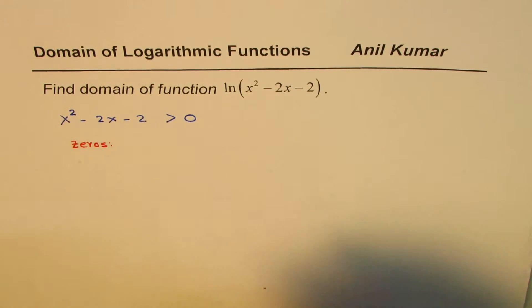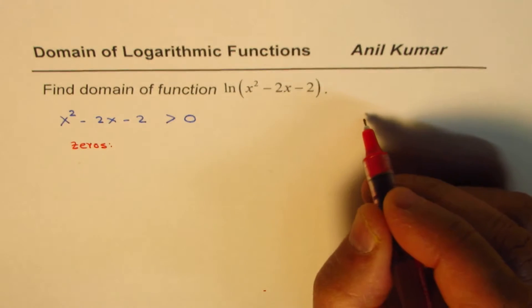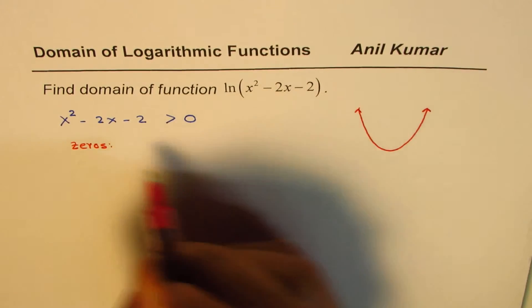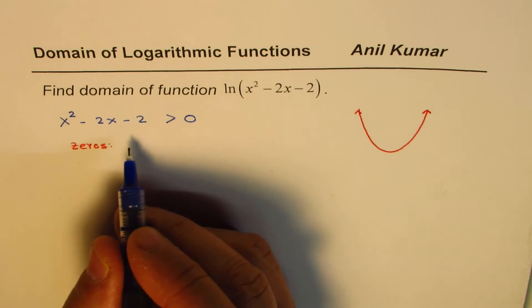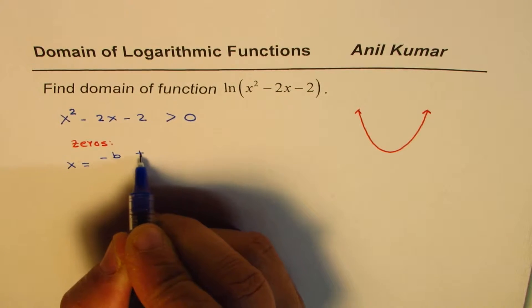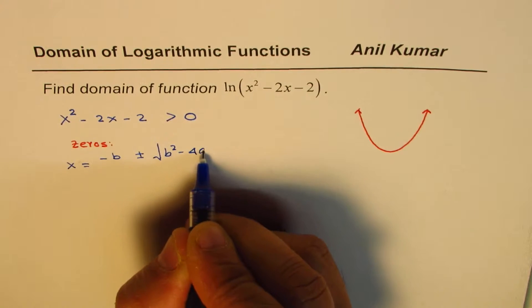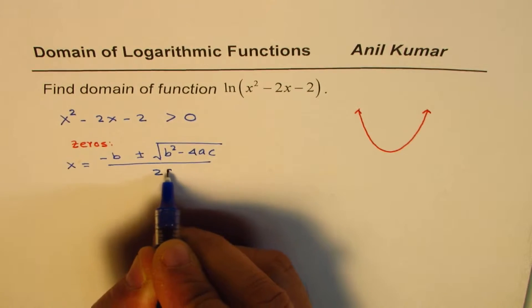We know this is a parabola which opens upwards. We don't know what the zeros are, but this equation definitely represents an upward-opening parabola. So let's find the zeros using the quadratic formula: x = (-b ± √(b² - 4ac)) / 2a.